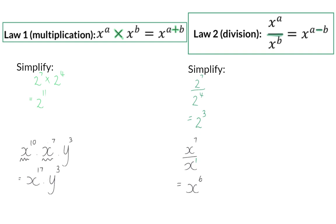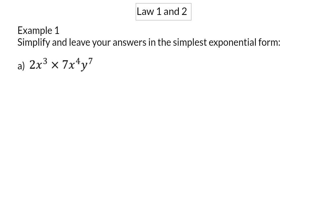Next, we're going to have a look at how these two laws can be used in algebraic expressions. Example 1: Simplify and leave your answers in the simplest exponential form. In A, you have to multiply and therefore you can use law 1. I'm reminding you that the exponential laws will only be used for those bases that have exponents. The 2 and the 7 are therefore multiplied as normal and will give a value of 14. Next, I'm going to use the first law for those bases that are the same. So here I will have x to the power of 7 because I add the exponents. This still needs to be multiplied by y to the power of 7.